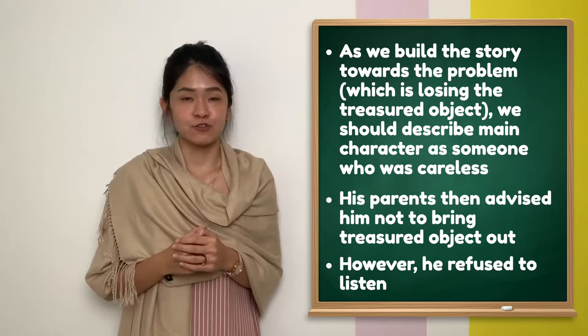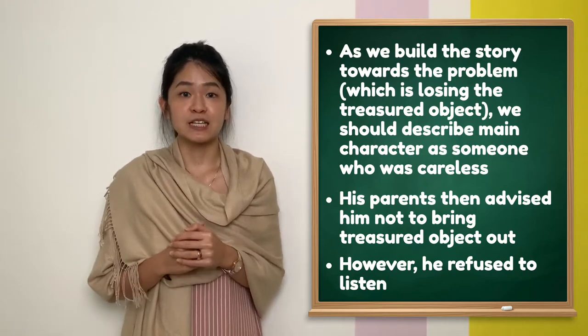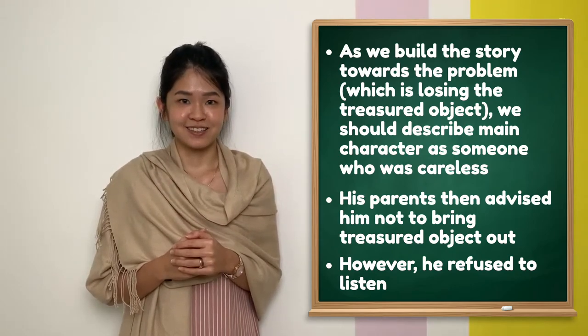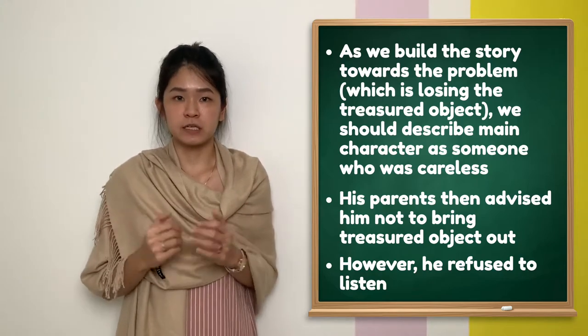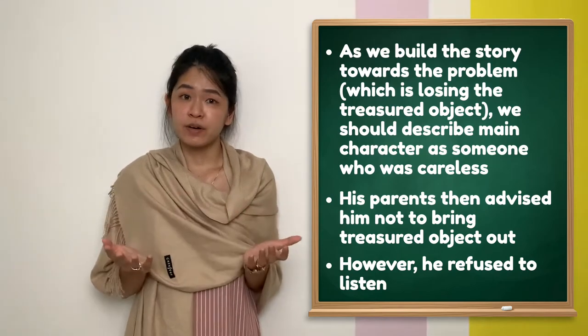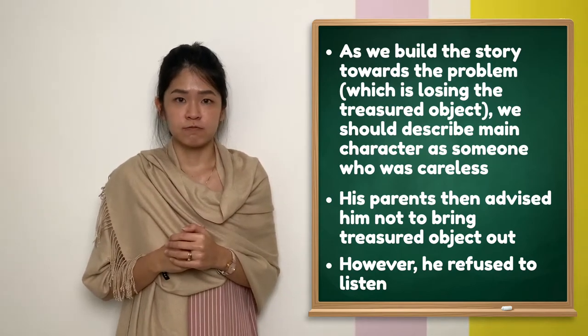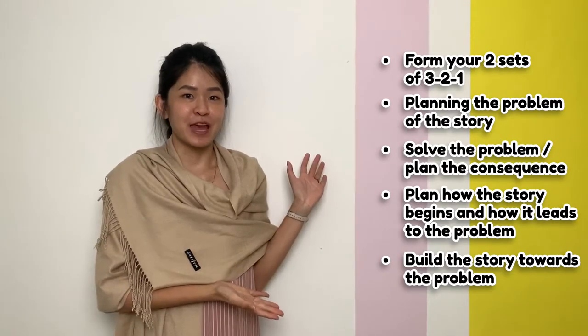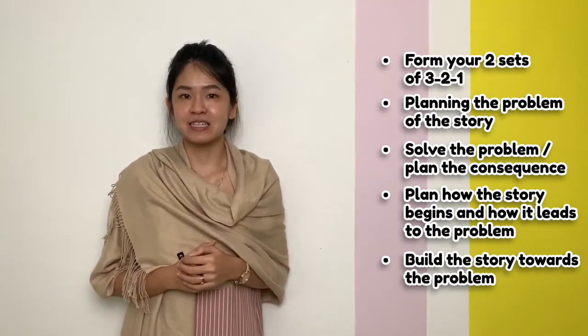As we build the story towards the problem, which is losing the treasured object, we should describe the main character as someone who was careless. His parents then advised him not to bring the treasured object out. However, he refused to listen. And there, we have a simple plot with our main ideas penned down.